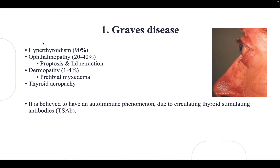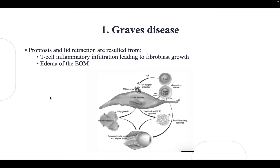Graves' disease involves hyperthyroidism in 90% of cases. Ophthalmopathy occurs in 20–40%, presenting with proptosis and lid retraction — the eye protrudes. Dermopathy occurs in 1–4%, presenting as pretibial myxedema, and there is also thyroid acropathy (thyroid clubbing). Graves' disease is believed to be an autoimmune phenomenon due to circulating thyroid-stimulating antibodies. Proptosis and lid retraction result from T-cell inflammatory infiltration leading to fibroblast growth and edema of the extraocular muscles.